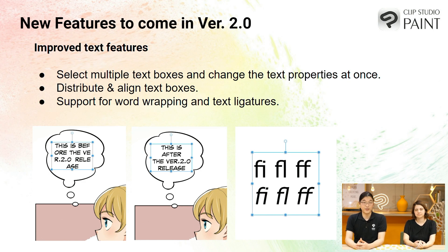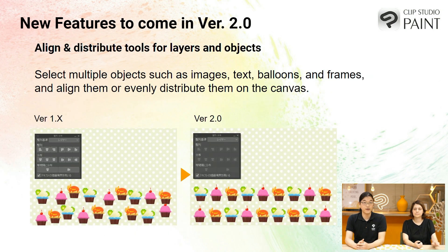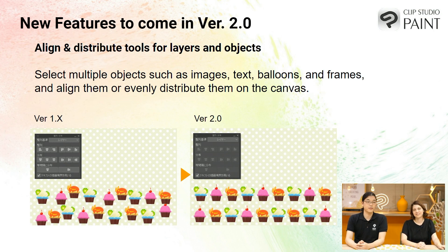Many people have asked in the past for us to upgrade or improve our text tool, and in version 2.0 we'll be adding new features to meet those requests. Not only will you be able to have more control over your text itself, but you'll also be able to control the position of multiple objects with the align and distribute feature. You can select different objects and use the different align functions to align them cleanly and very efficiently, which should save time for a lot of people.